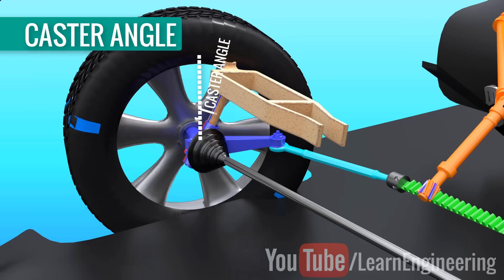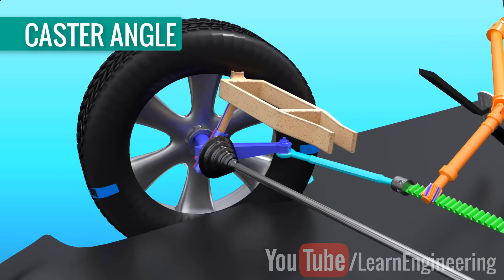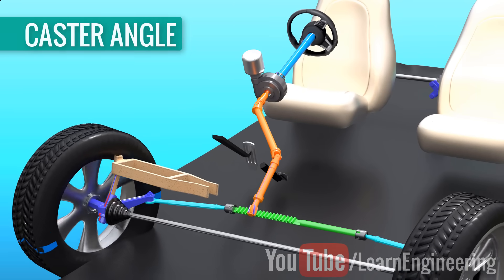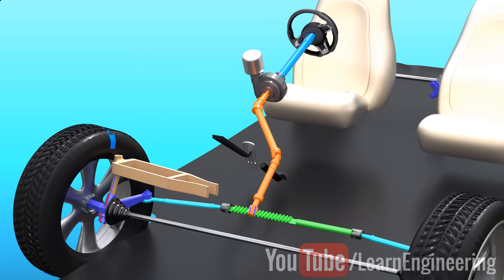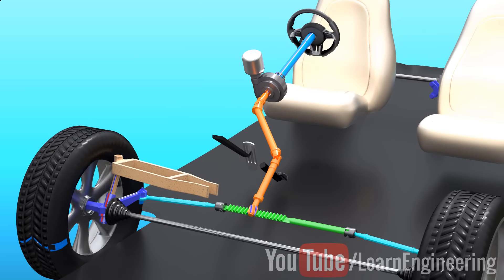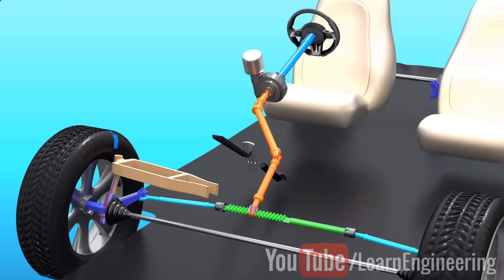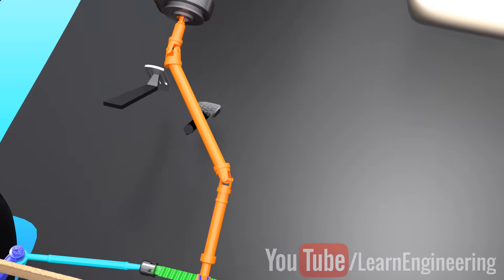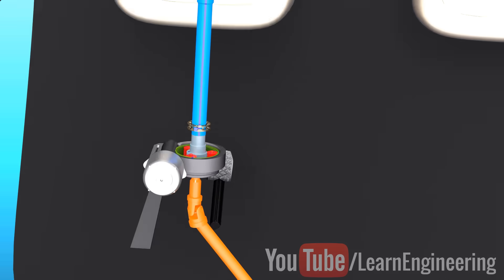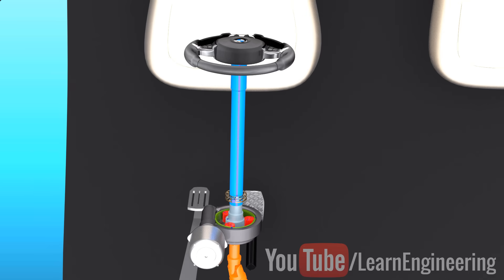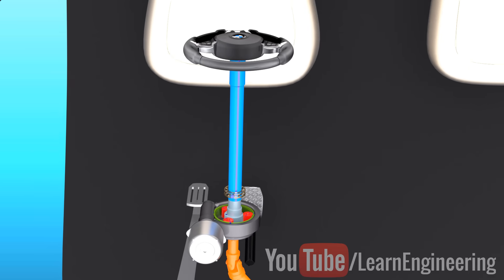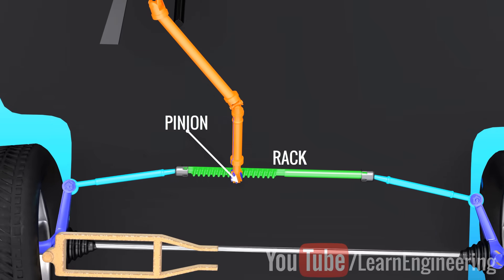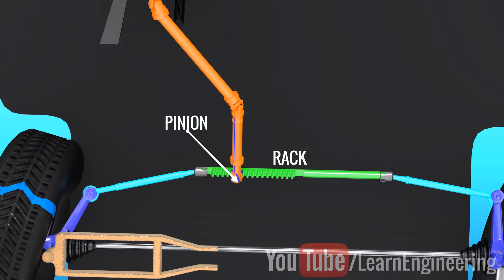Let's discover the interesting physics behind how providing an angle to the front wheels makes the wheels and the steering wheel come back to their original positions. First, let's have a closer look at the steering mechanism. It is clear that the rotation of the steering wheel is transferred to the rack and pinion mechanism, which then turns both the wheels.